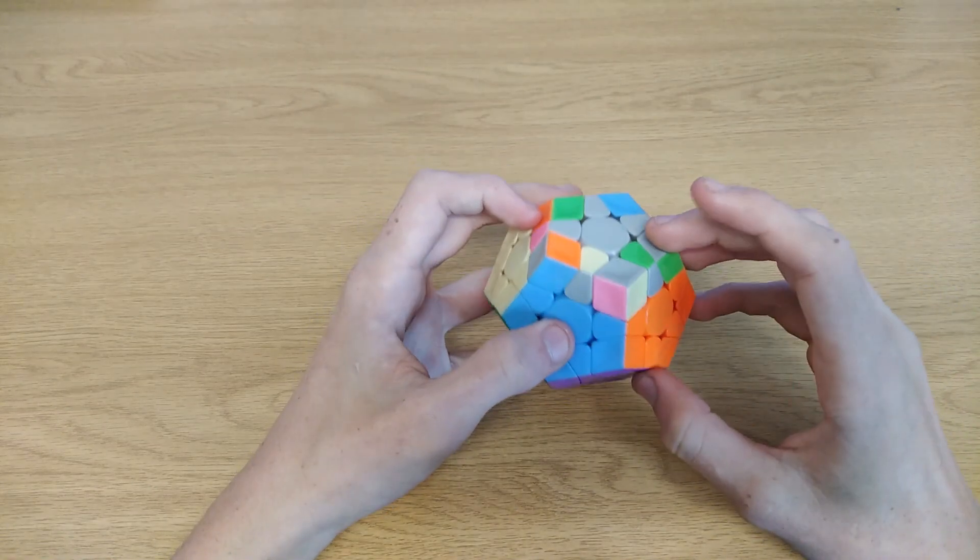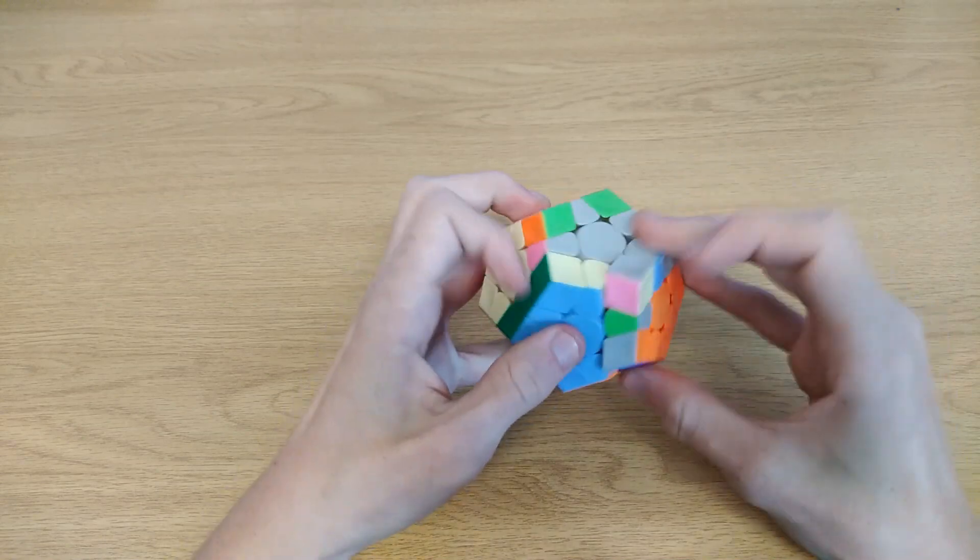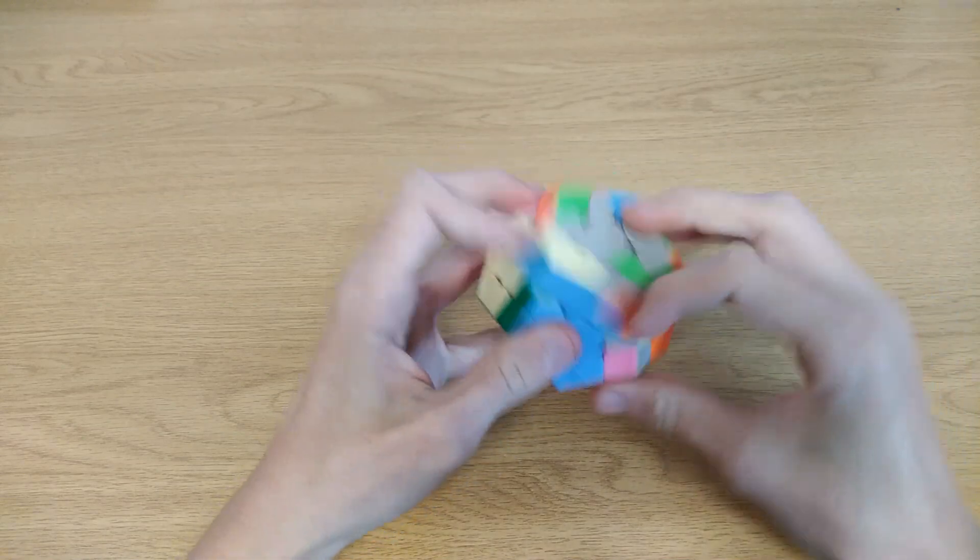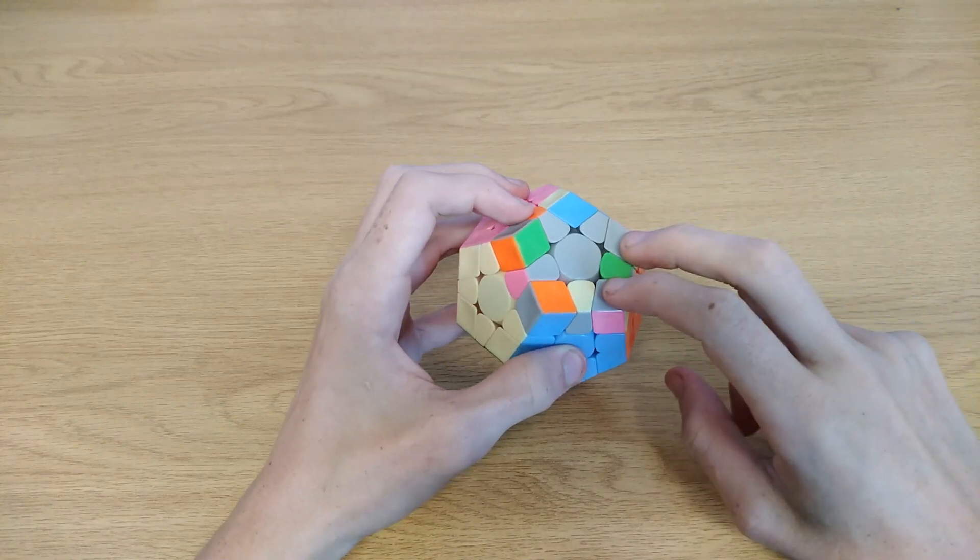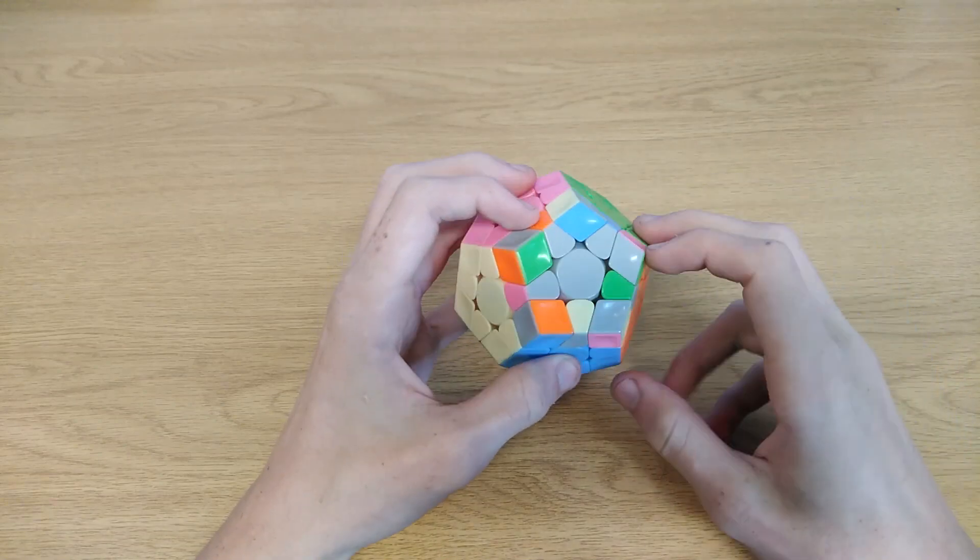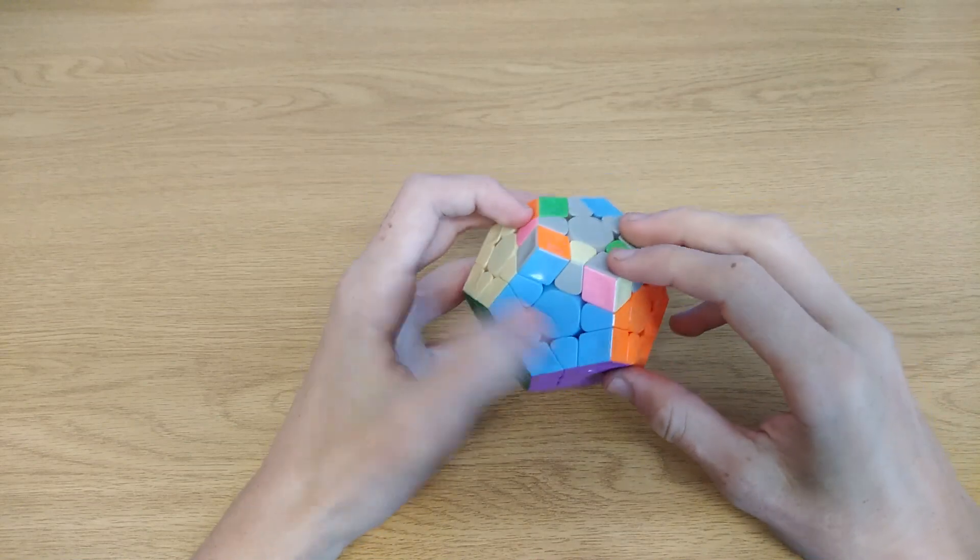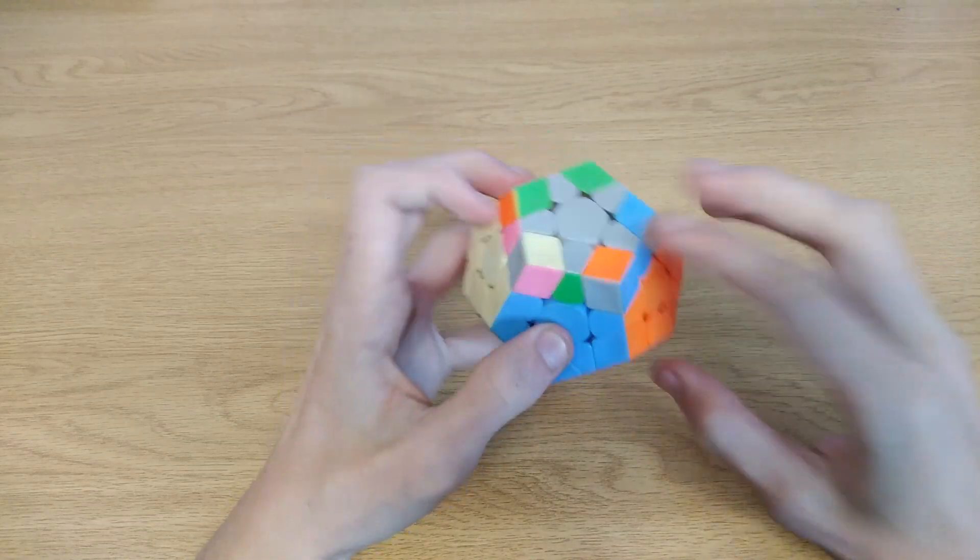Another case is like this. The normal way we do this is F sexy move F', but I know that when I do the F sexy move F', these two corners, if they are oriented, they won't be after the algorithm. And so by doing that algorithm, we get this case.